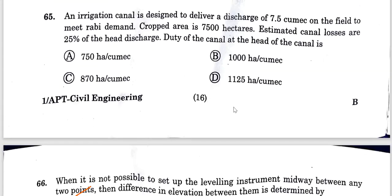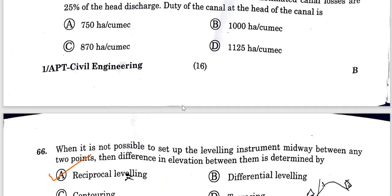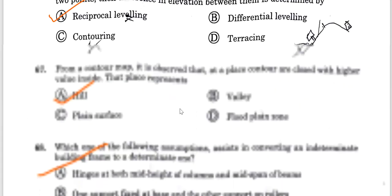Question 65: An irrigation channel is designed to deliver a discharge of 7.5 cubic meters per second. The field area, rabi demand crop area, estimated losses are 25% of head discharge. The duty is determined per hectare per cubic meter per second and will be 750 hectares per cubic meter per second.